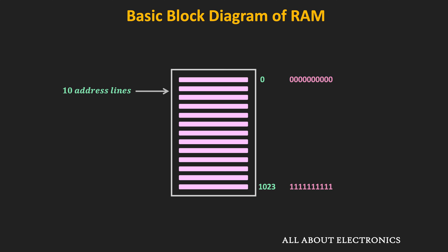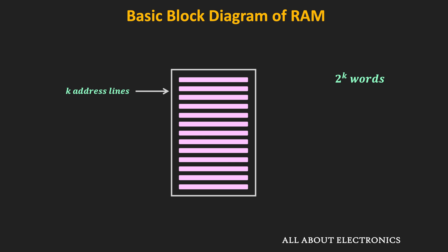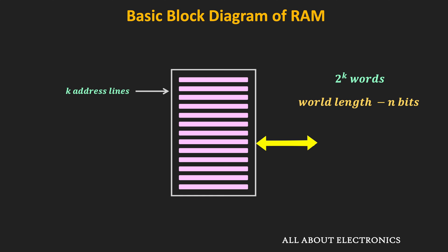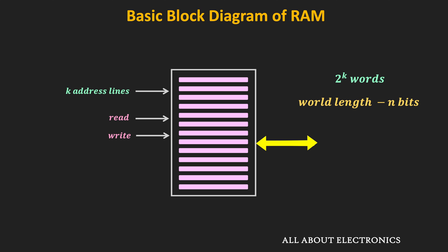In general, if the RAM consists of 2^k words, then to access these words it requires k address lines. That means the required number of address lines should be greater than or equal to log m to the base 2, where m is the number of words in the RAM. Now if each word in the RAM is of n bits — that is, the word length is n bits — then when we want to read data from a specific word, we require n output lines, and when we want to write data, we require n input lines. Typically, instead of having separate data lines for reading and writing, the same data lines are used. Depending on the read and write control signals, either data will be written to the RAM or read from it. These control signals decide the direction in which the data flows.